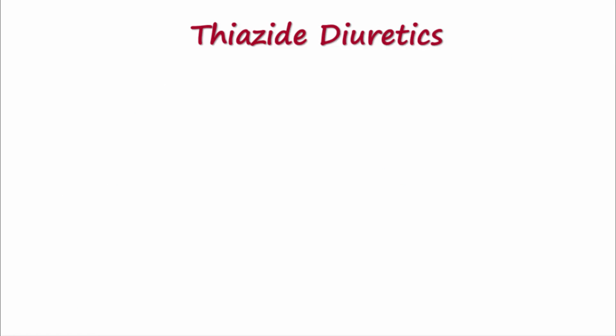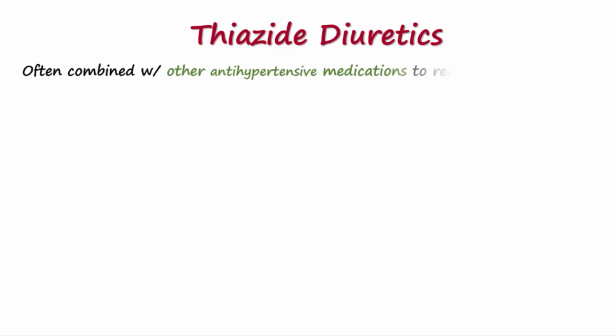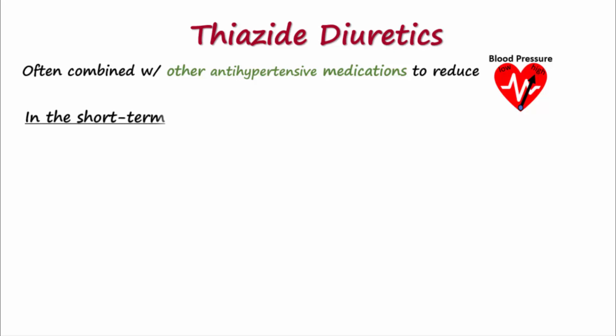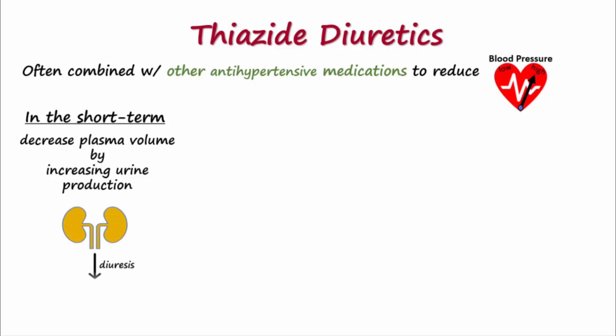Thiazide diuretics are also useful to treat high blood pressure, often in combination with other antihypertensive medications. Since they are diuretics, acutely they lower blood pressure by decreasing intravascular volume by increasing urine production. However, negative feedback mechanisms kick in and renin levels rise to counter this effect, since increased renin release leads to an increase in blood pressure.